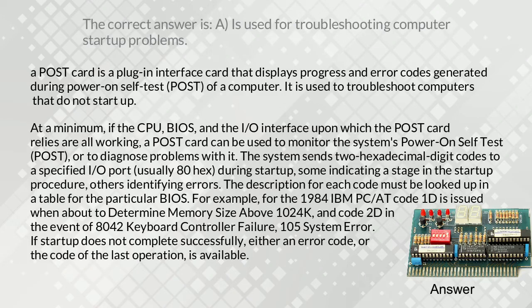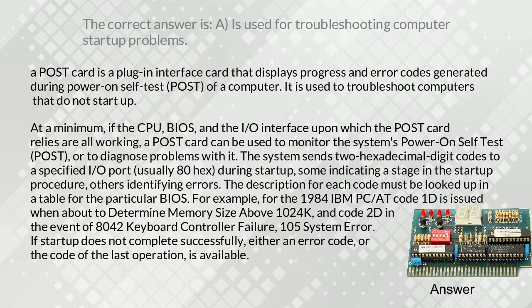The system sends two hexadecimal digit codes to a specified I/O port, usually 80 hex, during startup — some indicating a stage in the startup procedure, others identifying errors. The description for each code must be looked up in a table for the particular BIOS. For example, for the 1984 IBM PC, code 1D is issued when about to determine memory size above 1024K, and code 2D in the event of 8042 keyboard controller failure, 105 system error. If startup does not complete successfully, either an error code or the code of the last operation is available.